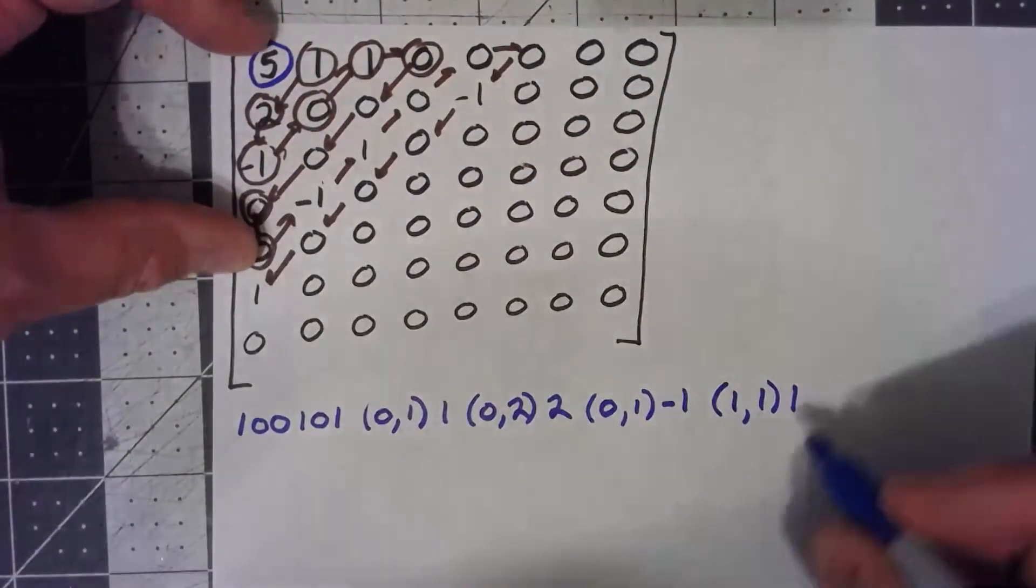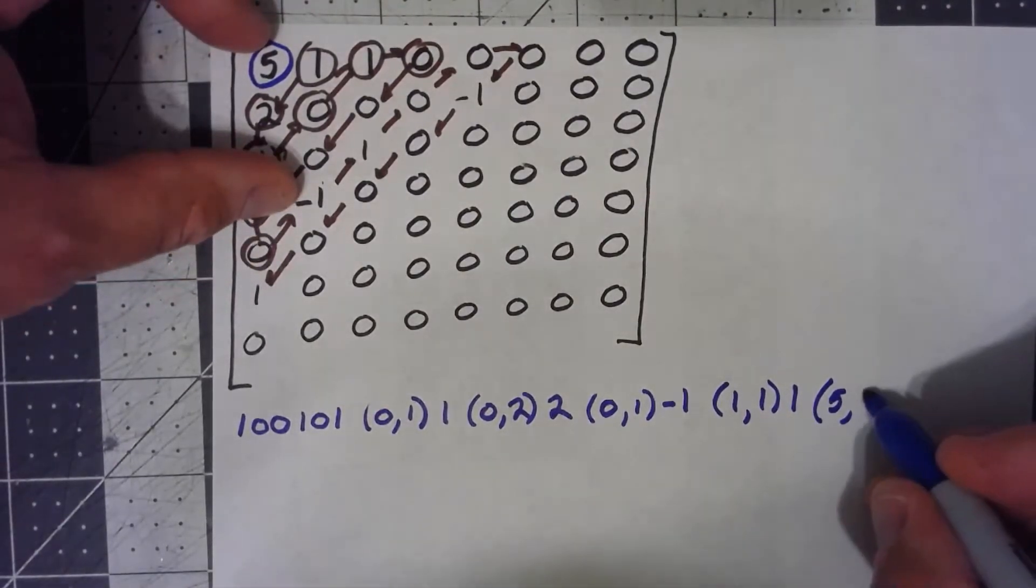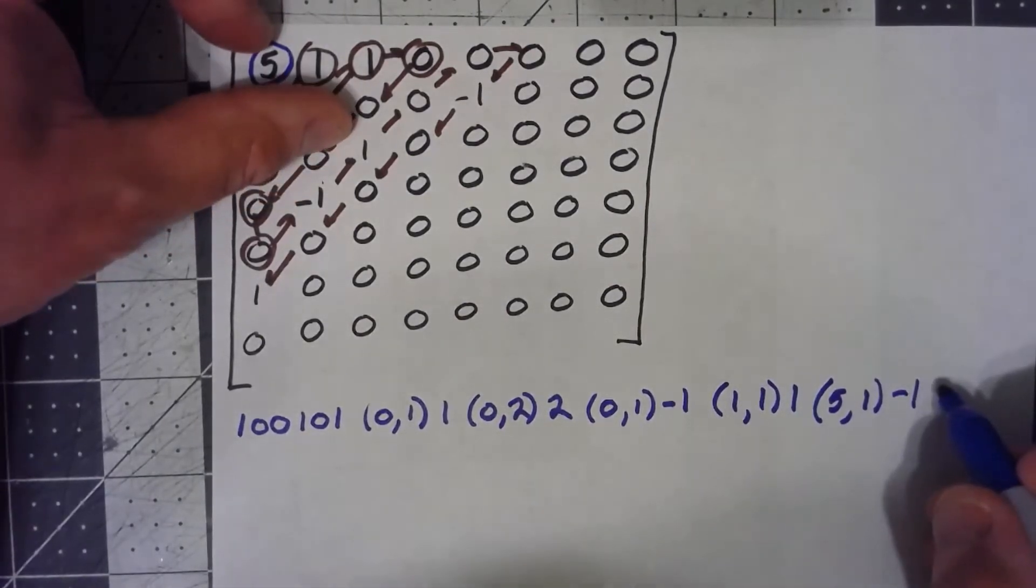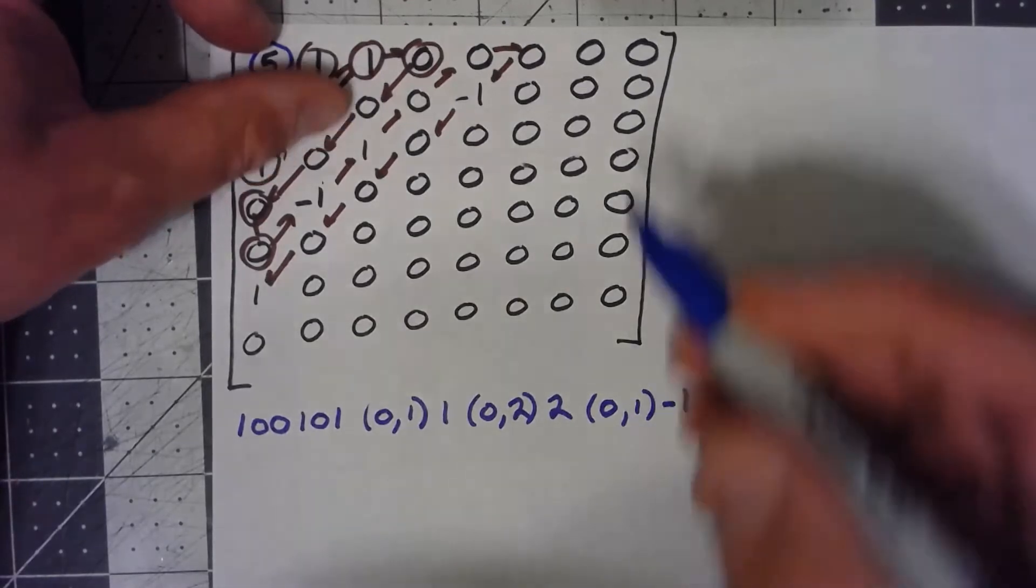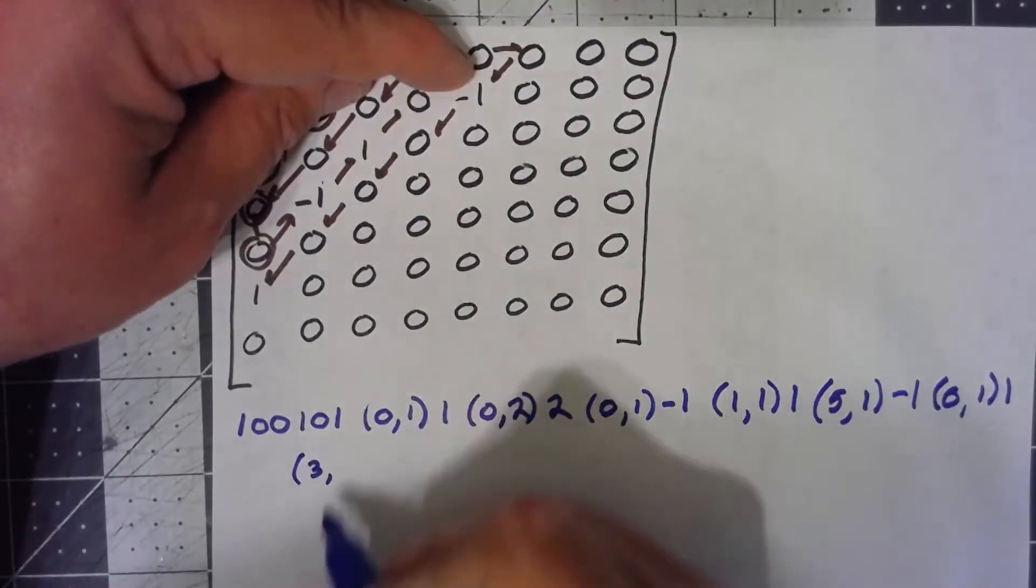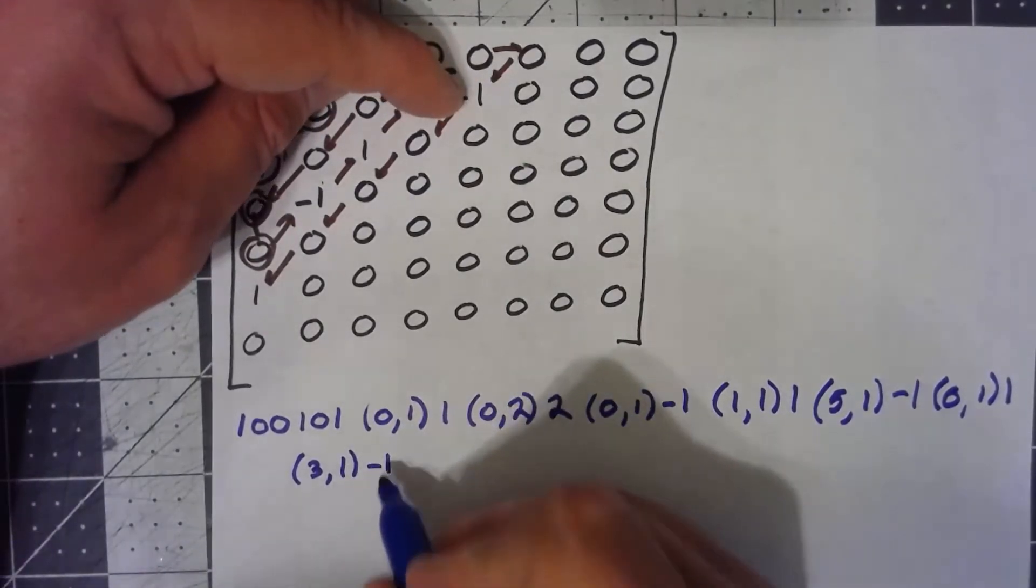No zeros, one bit to encode a positive one. Three zeros, one bit to encode a negative one.